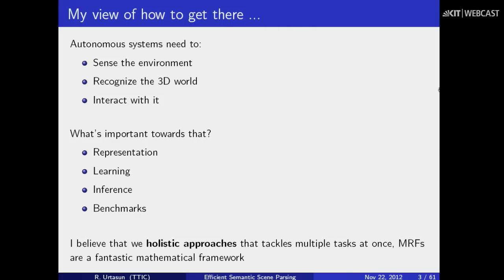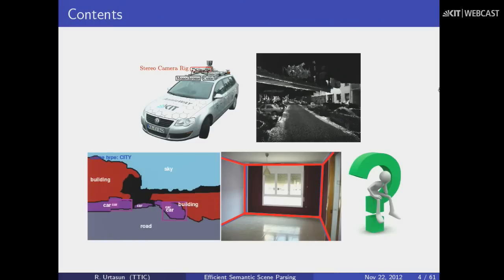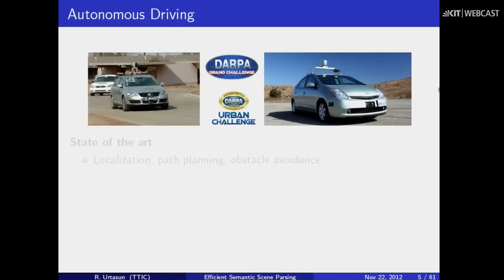I also believe that holistic approaches are actually the next step towards this goal. By holistic approaches I mean trying to solve multiple tasks at once — not doing a serial process, but trying to really infer all the uncertainties about these tasks together. I also believe that right now MRFs, Markov random fields, are a fantastic mathematical tool in order to do this. I'm going to show in particular: data, 3D reconstruction, semantic parsing in indoor and outdoor scenes, and something at the end which is a surprise — something I'm very excited about and very new.